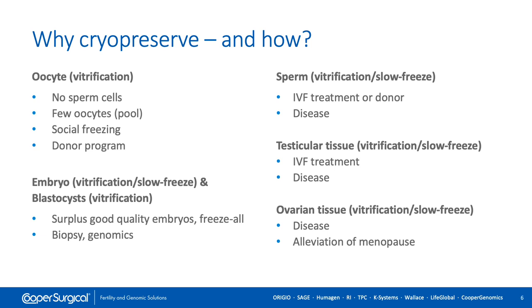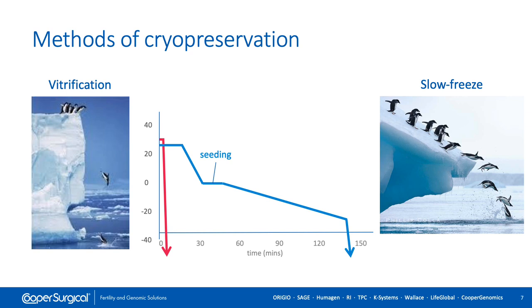Testicular and ovarian tissue cryopreservation is an actively developing area within IVF, mostly due to delaying reproduction in the case of disease or to alleviate menopause. There are two main methods of cryopreservation used in IVF laboratories for the past few decades: slow freezing and vitrification.